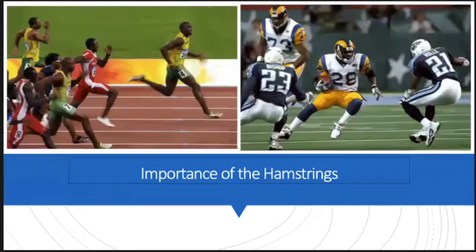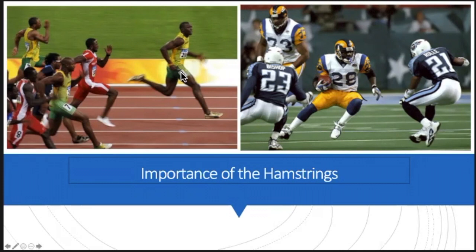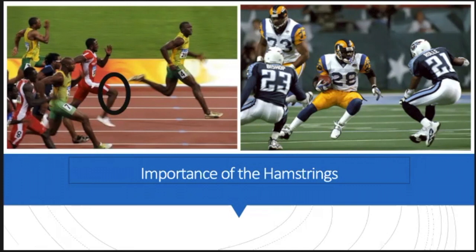We're going to start off with just the importance of the hamstrings. The importance of the hamstrings becomes apparent when we're at maximal speed running and change of direction tasks. As we can see here on the left-hand side, we have two runners at different parts of their swing phase. The first athlete's right leg is in the early swing phase, and this is the highest point possible that the thigh reaches — we would call this a thigh block.